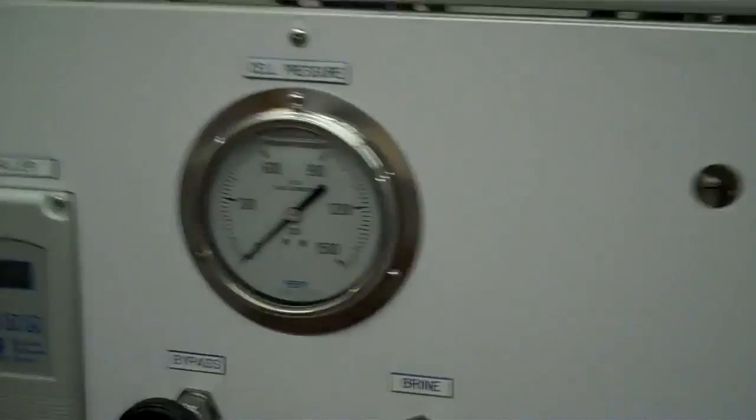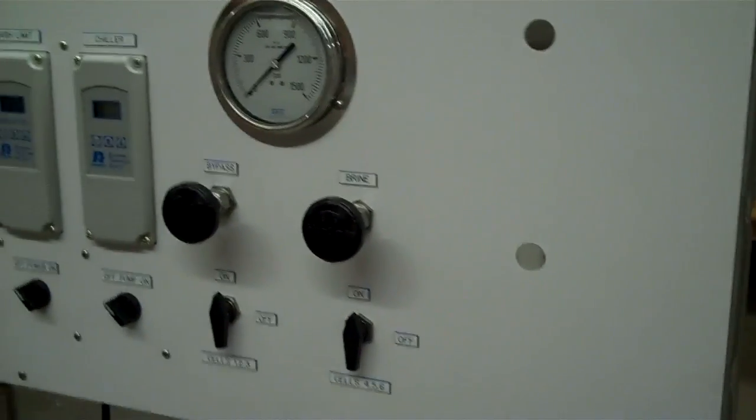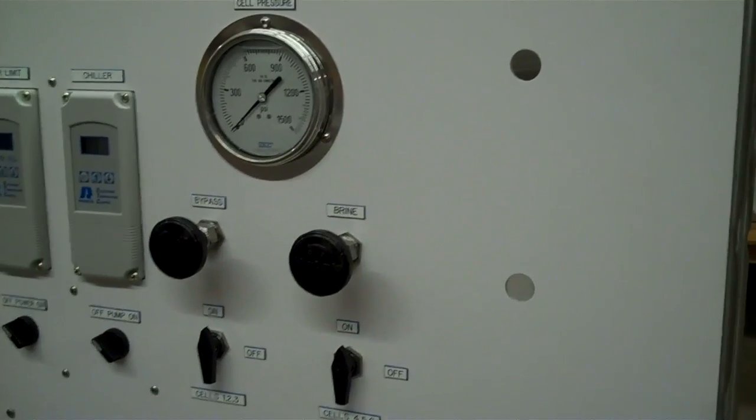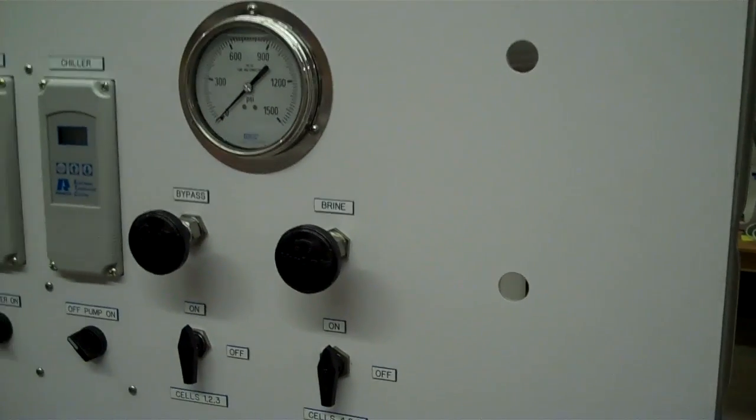The holes that you see there is where the flow meter goes. We're changing out the flow meter. We had a five gallon flow meter on it, now we're changing it to a three gallon flow meter.